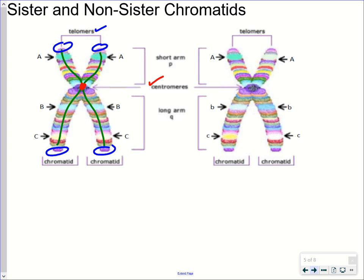From the centromere, one side may be shorter than the other. The shorter side, from the centromere to the telomere, is called the short arm, and the other is simply referred to as the long arm. Once we have this duplicated chromosome — still called one single chromosome — we call each half of it a chromatid. Chromatid refers to one half of a duplicated chromosome.